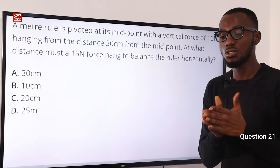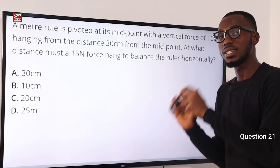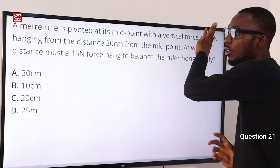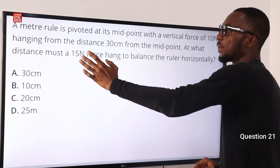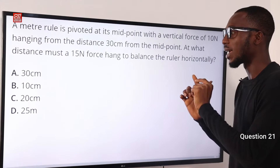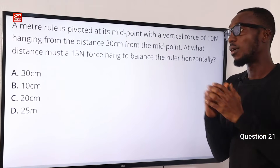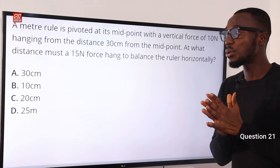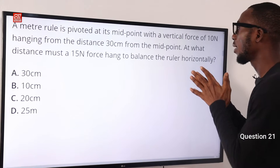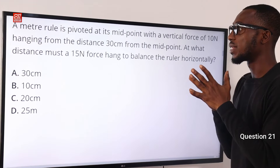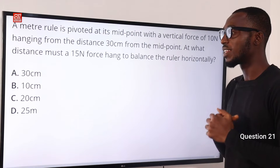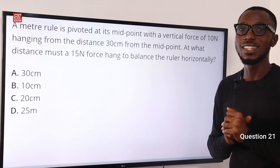This is very simple, just use clockwise moment equals anti-clockwise moment. So we will have 30 times 10, that is 300, equals 15 times x. So that is 300 equals 15x. Therefore x equals 300 over 15, which gives 20. The distance has to be 20 cm so that this can create a balance. The correct option here is option C, 20 cm.